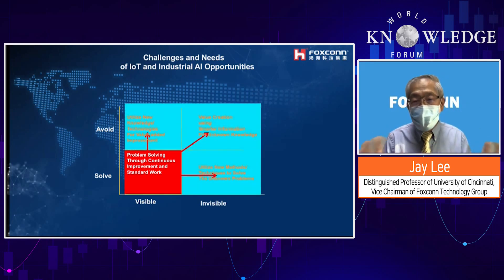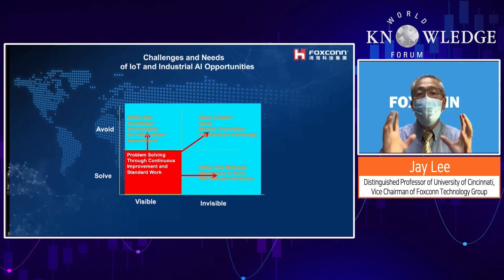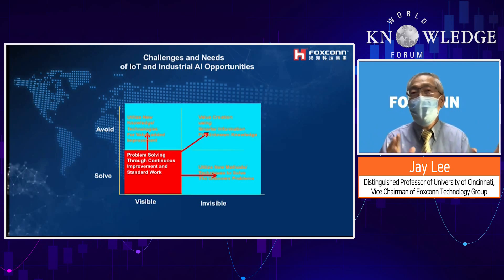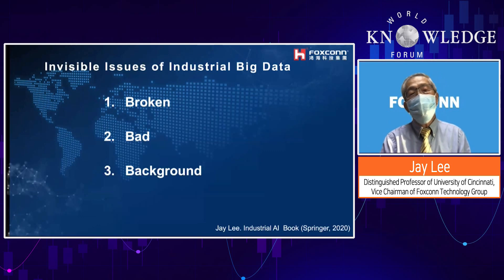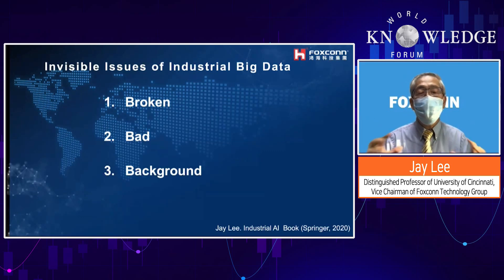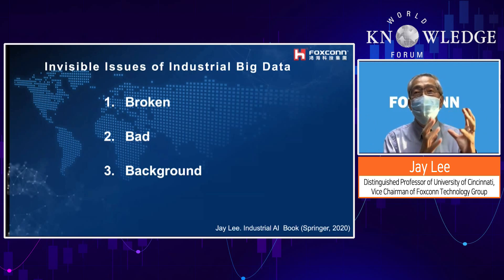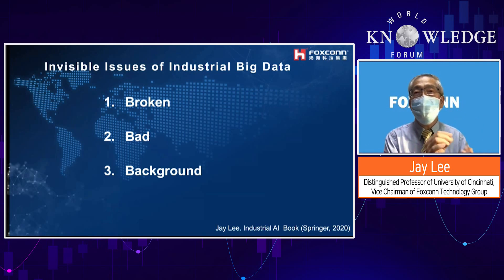This chart describes statistically how we solve problems in the AI space. The red area is where AI is easy to apply, but the blue area is where AI should be applied. One of the three key issues in industrial AI is big data — specifically broken background data. Data comes in many kinds; sometimes you collect data but forget to record the background context, so the data baseline is different.